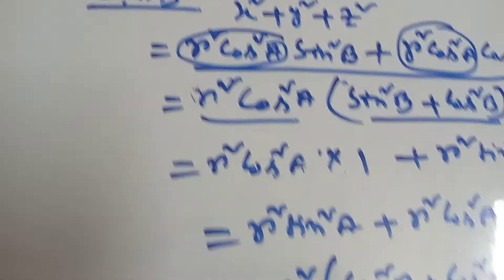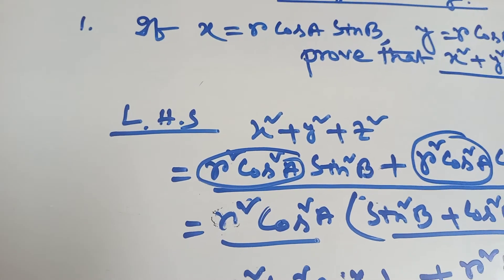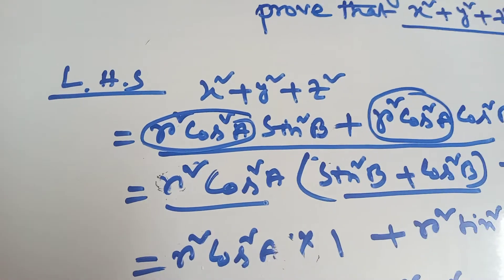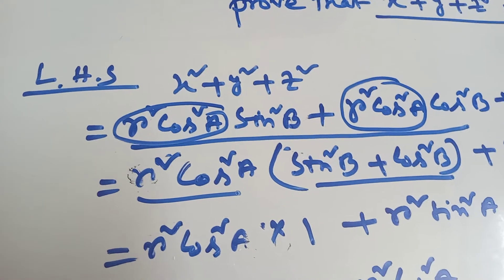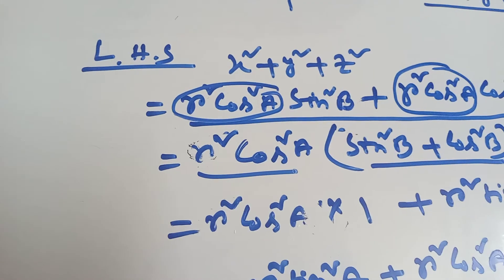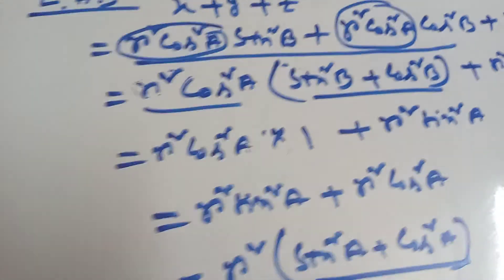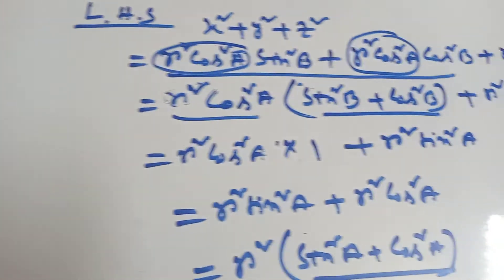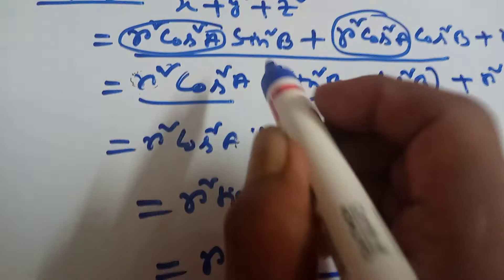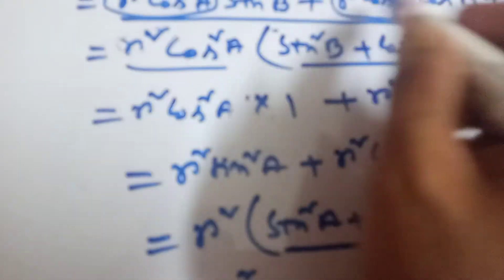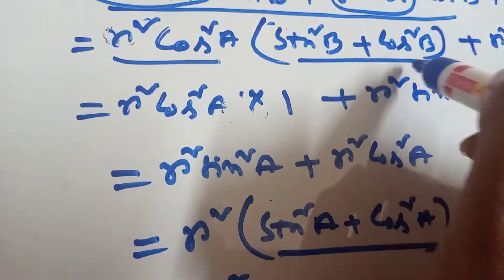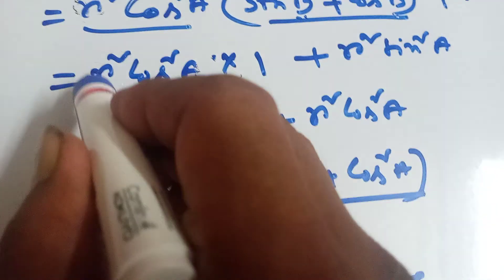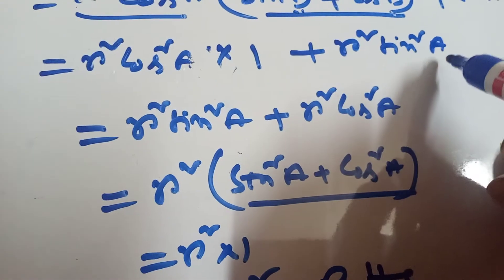To recap: given x equal to R cos A into sin B, y equal to R cos A into cos B, z equal to R sin A, take left hand side x square plus y square plus z square. Put in the values, take common R square and cos square A from the first two terms, leaving sin square B plus cos square B equal to 1. Then left with R square cos square A plus R square sin square A, which gives R square.